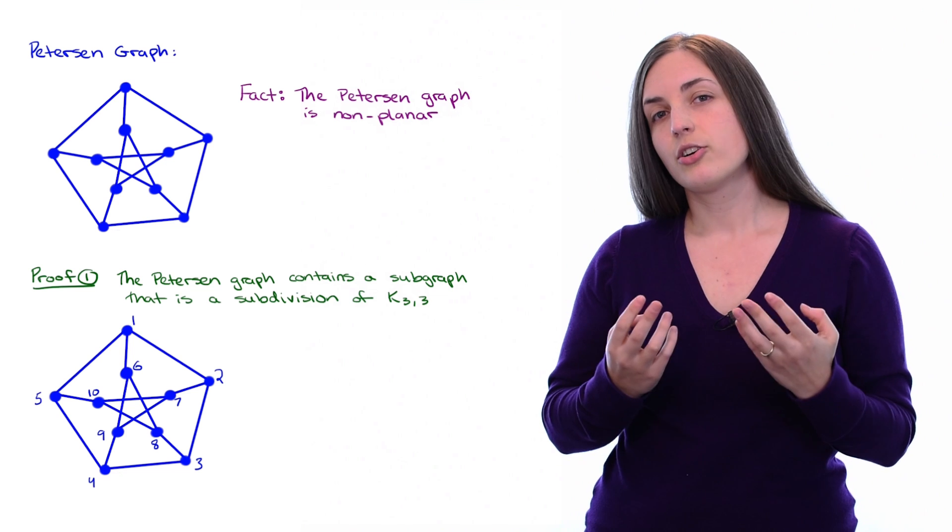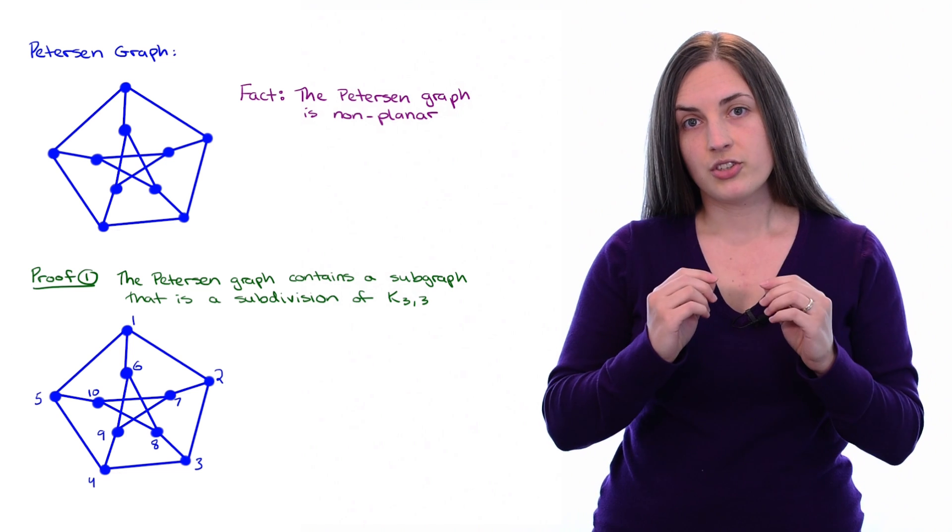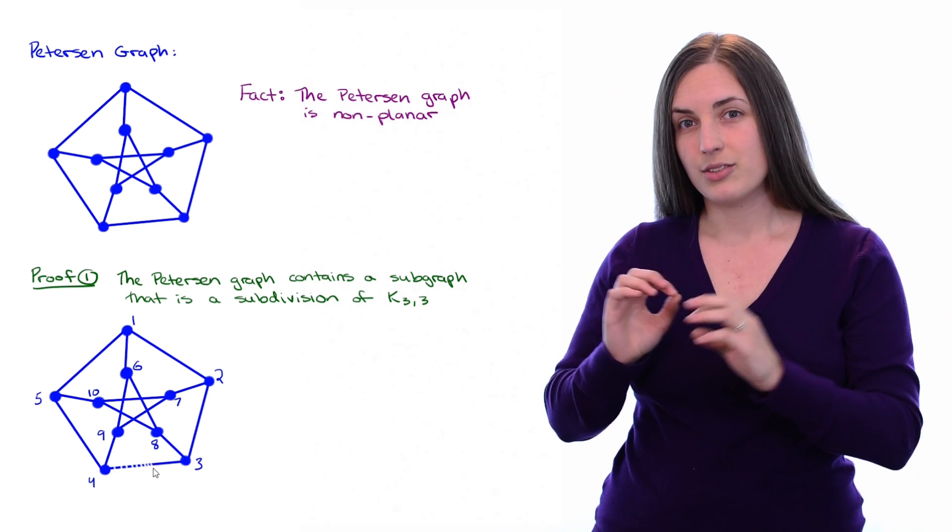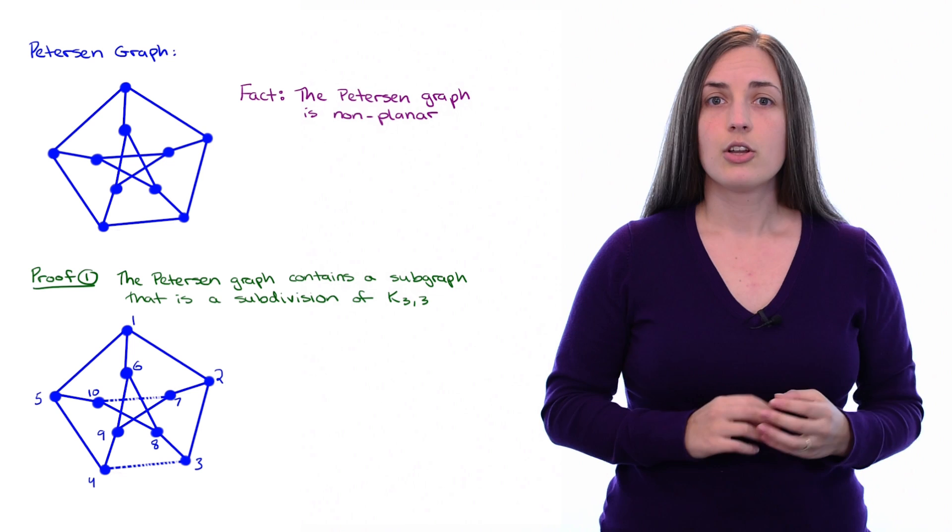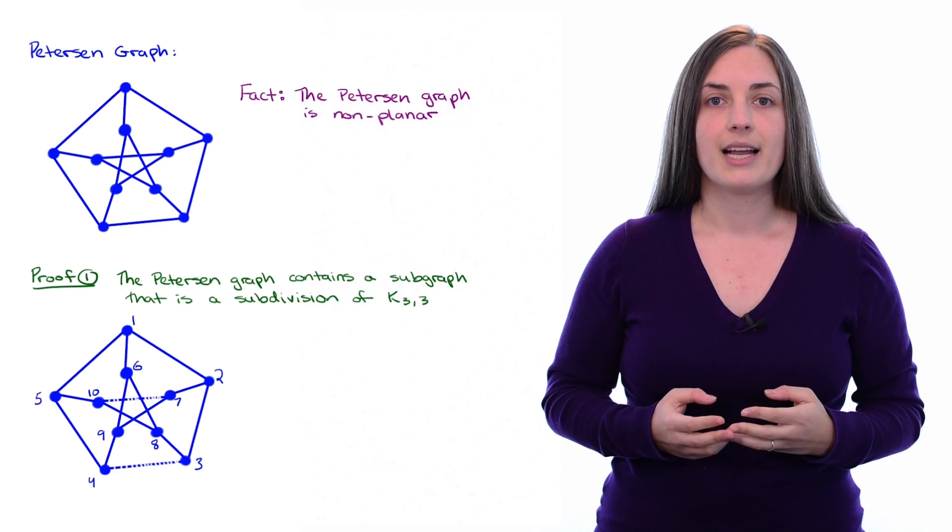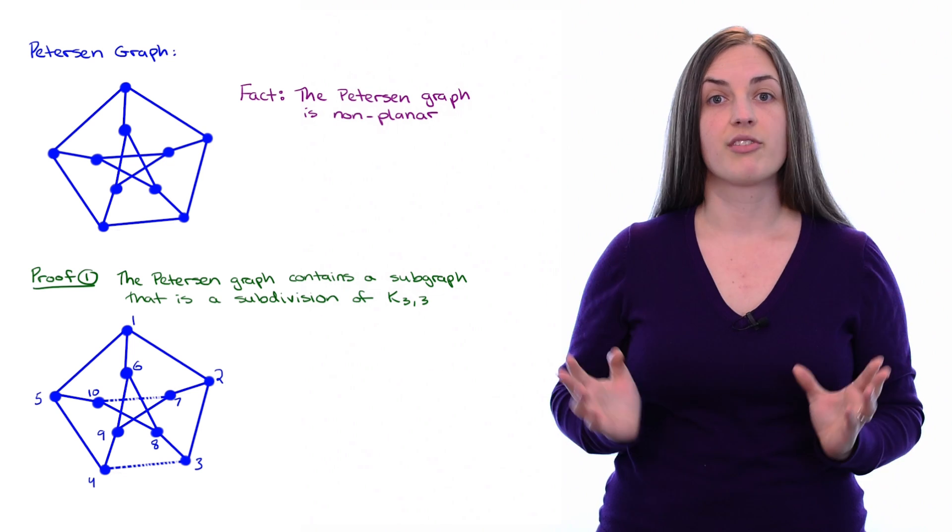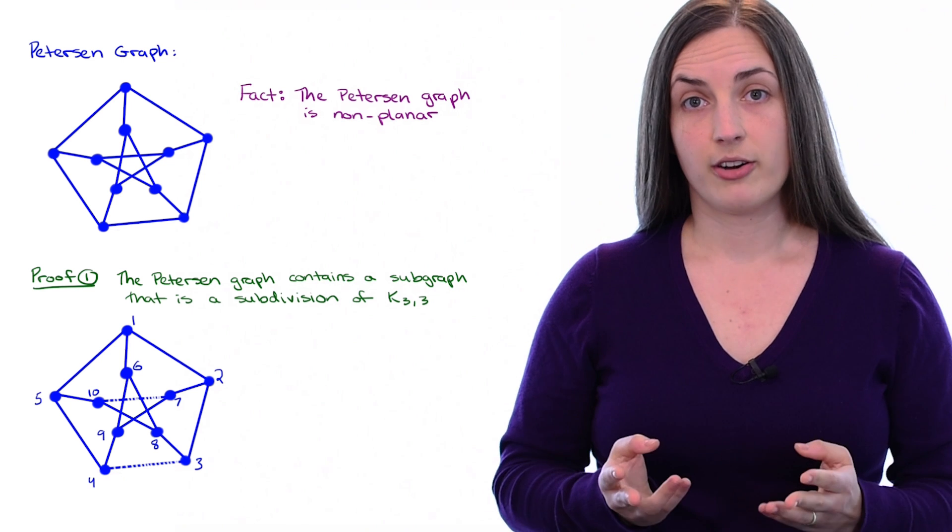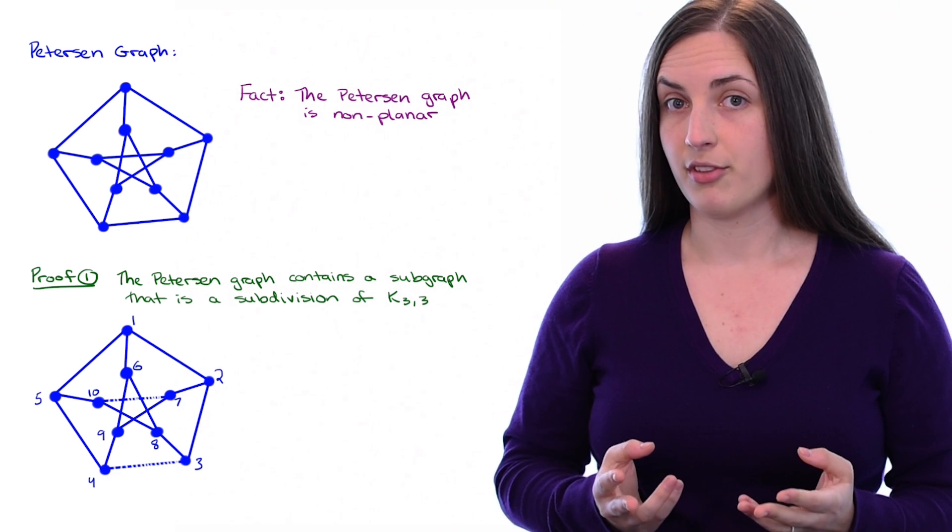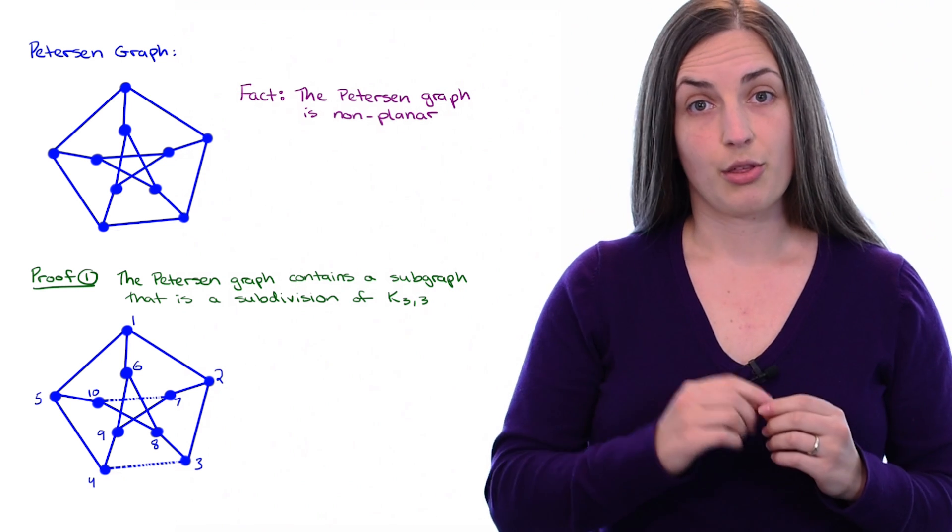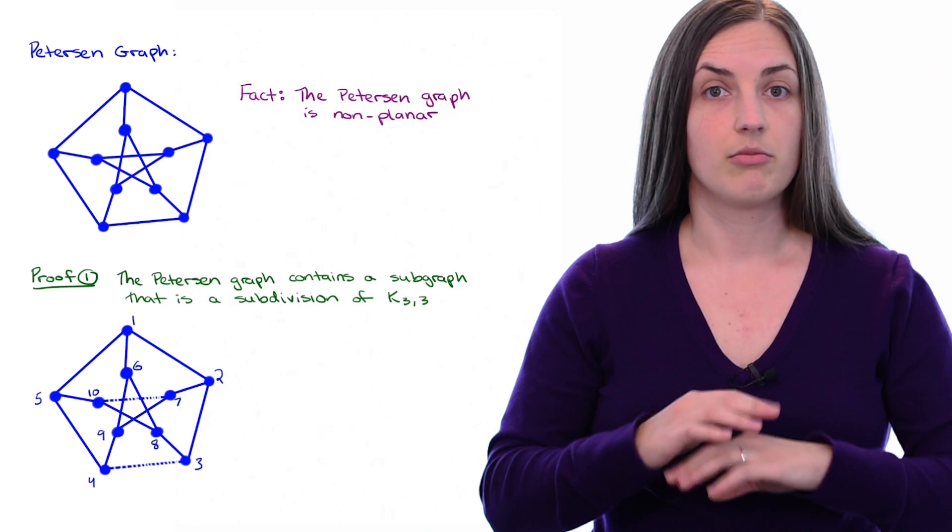Next, I want to look at a particular subgraph. So I'm just going to erase, or just leave as dotted lines, two of the edges. So you want to now imagine the subgraph which is just all of the solid edges. So we are now looking at the subgraph of the Peterson graph with the edges 3-4 and 7-10 removed.